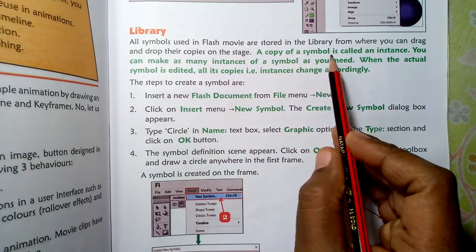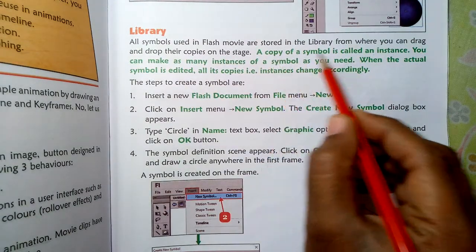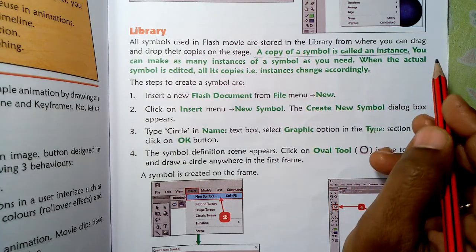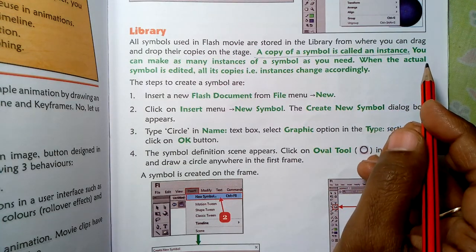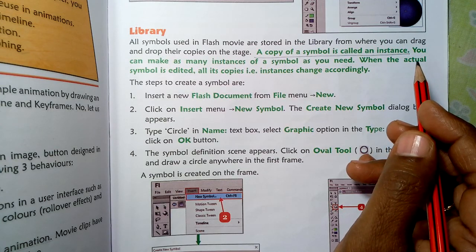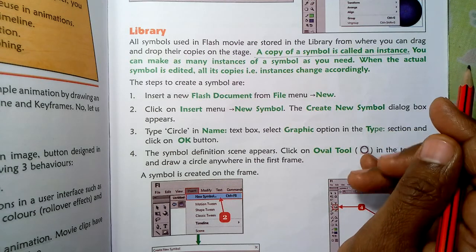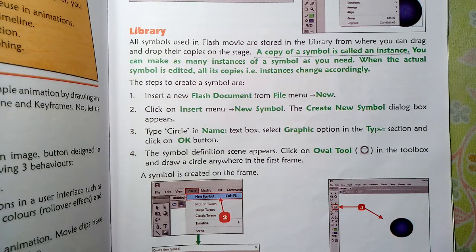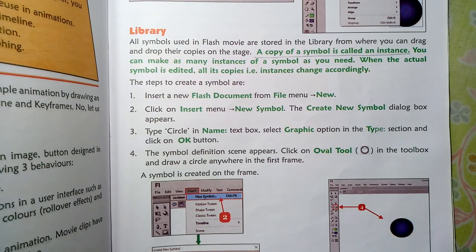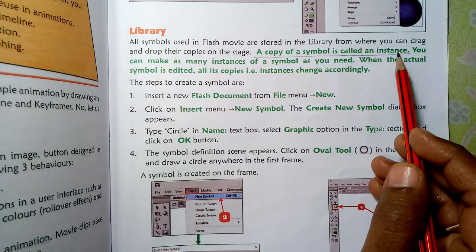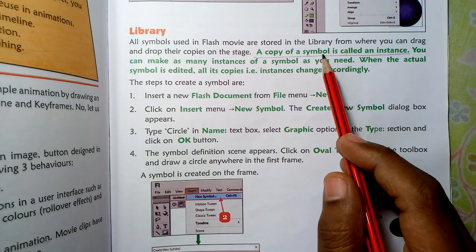A copy of a symbol is called an instance. A symbol is a complete object in itself — it could be an image, button, or a movie clip. We call it a symbol. A copy of a symbol is called an instance.